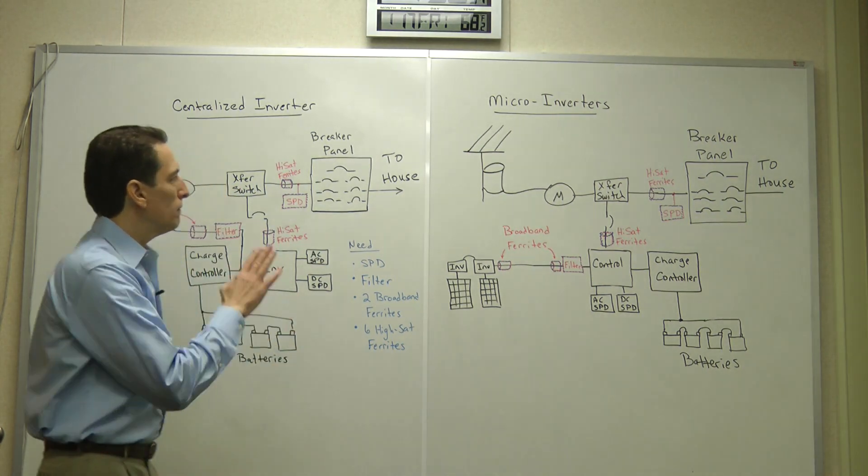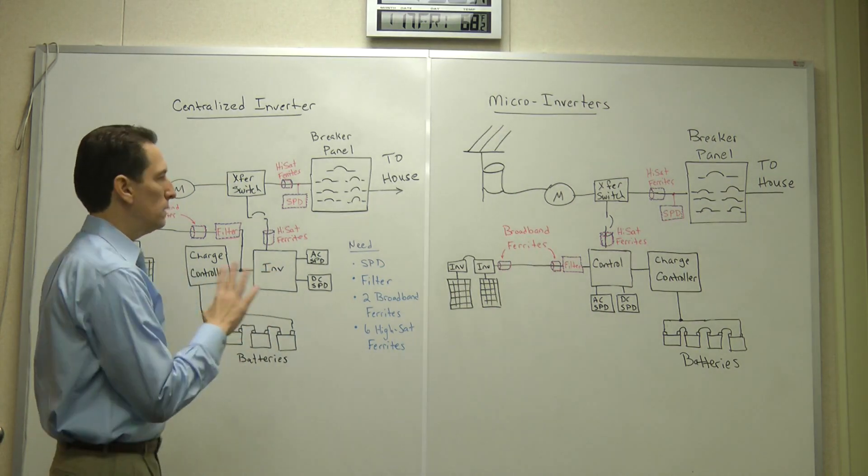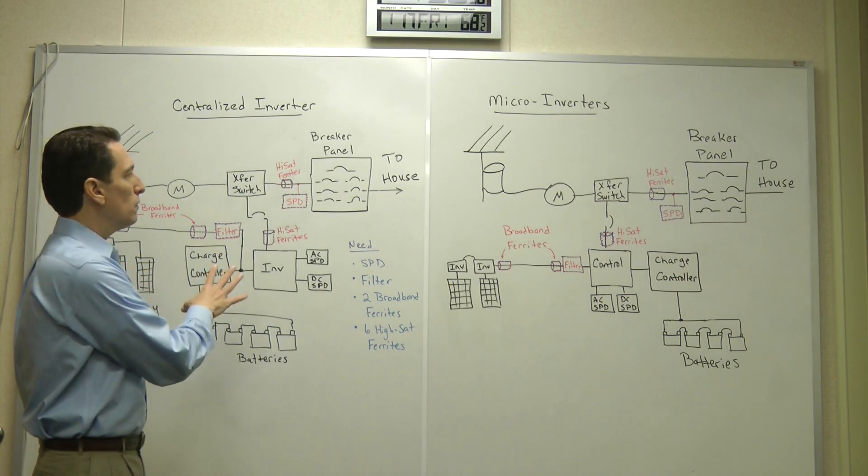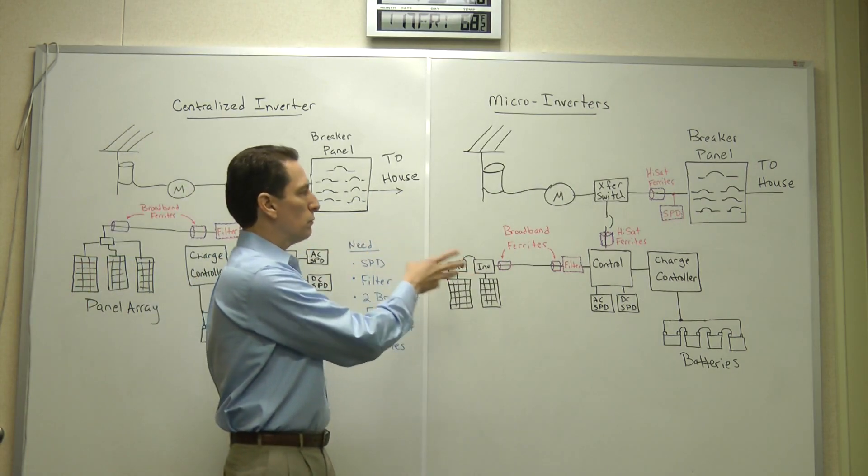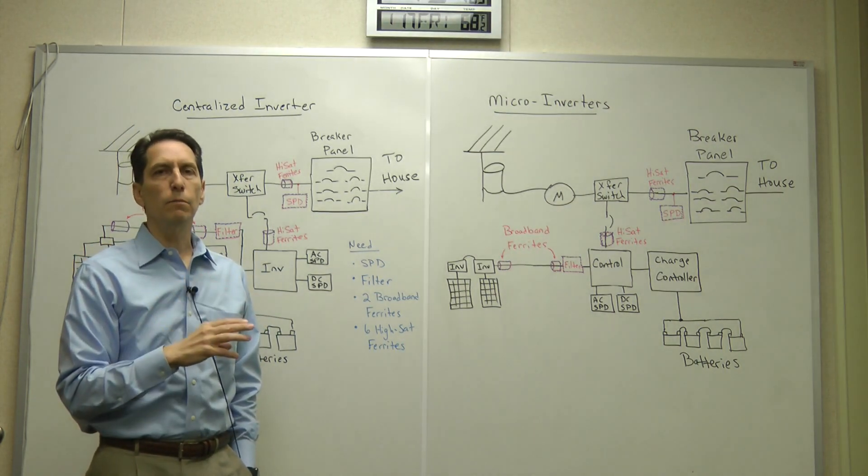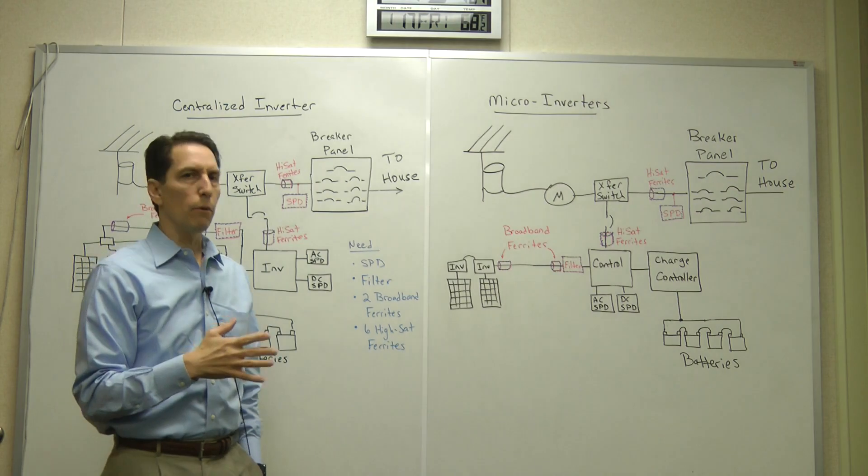What I've done is I've filled the board with two different types of solar power generation systems. These are sort of the types that are available today. There's the centralized inverter and then there's these microinverters which are out at the panel. I'll talk about them separately but what you'll find is the protections that you put in place are really the same for both.